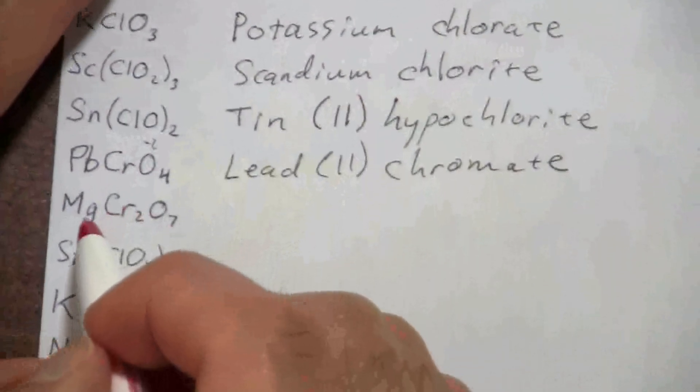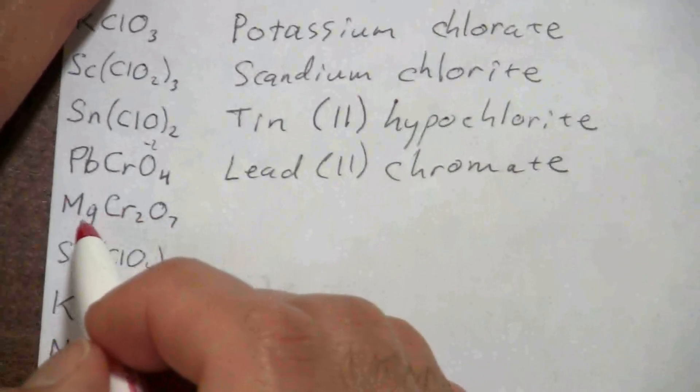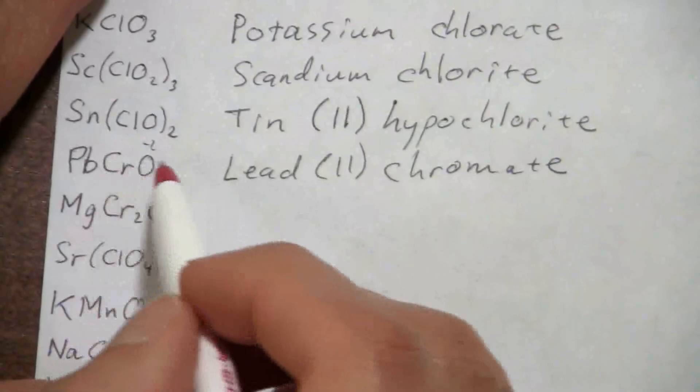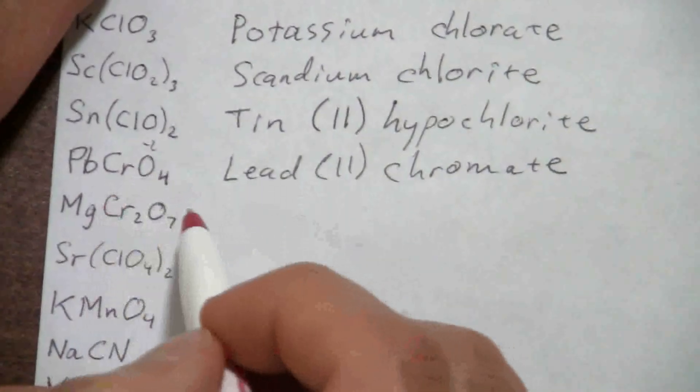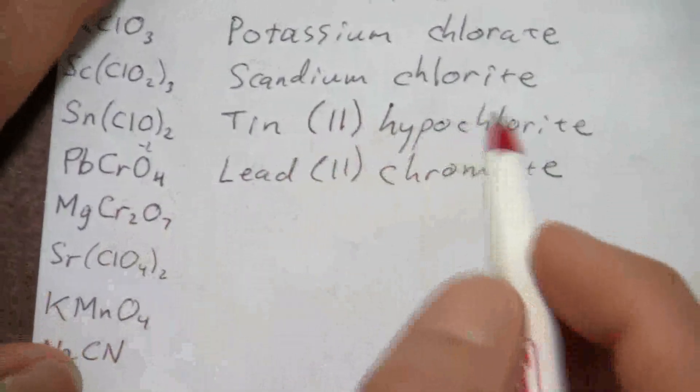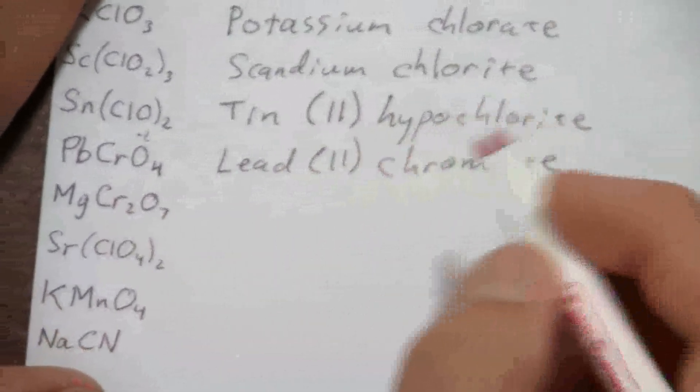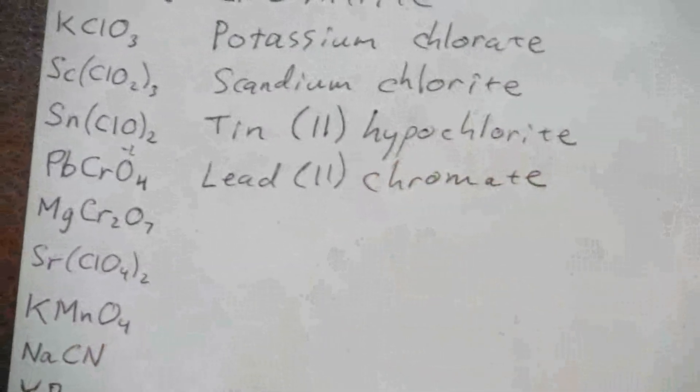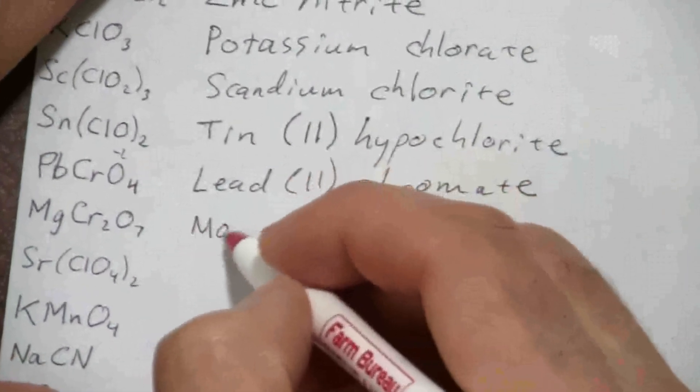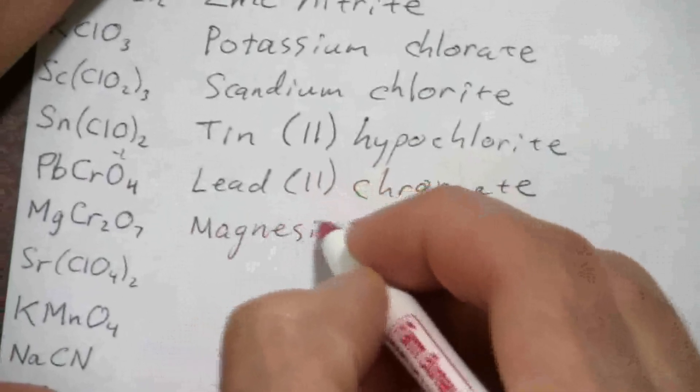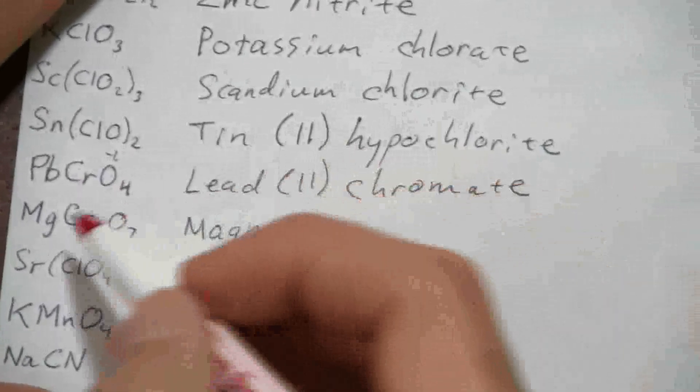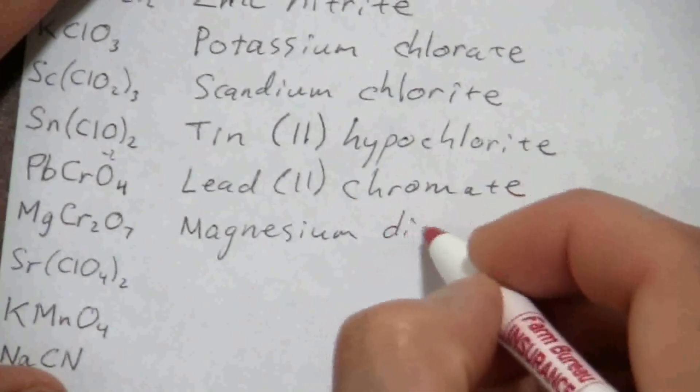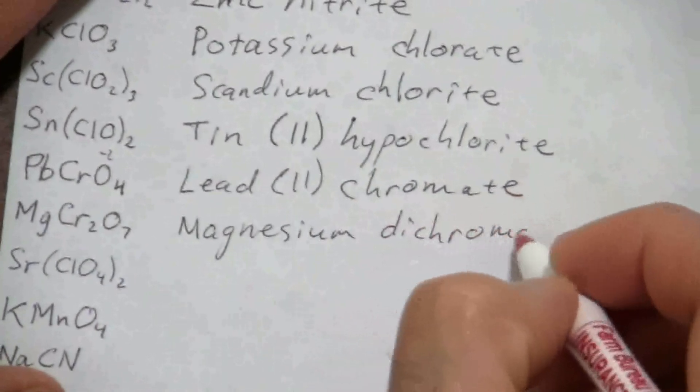All right, here we have magnesium, and a related ion to the chromate is dichromate. This is the dichromate ion. It just has that name, don't worry about using prefixes with that. But magnesium, of course, is always a positive two, so we don't have to write the roman numeral. It's just magnesium dichromate.